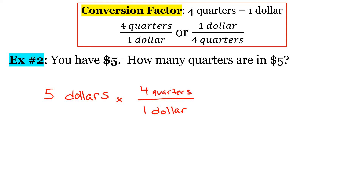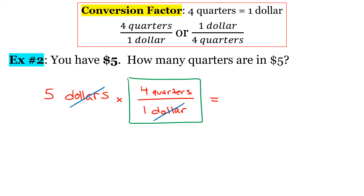I wrote my conversion factor as a fraction. Just like before, the units in the numerator and denominator are going to cancel out, so the only unit that remains is quarters. Both numbers we're multiplying are in the numerator, so five times four gives us 20 quarters.